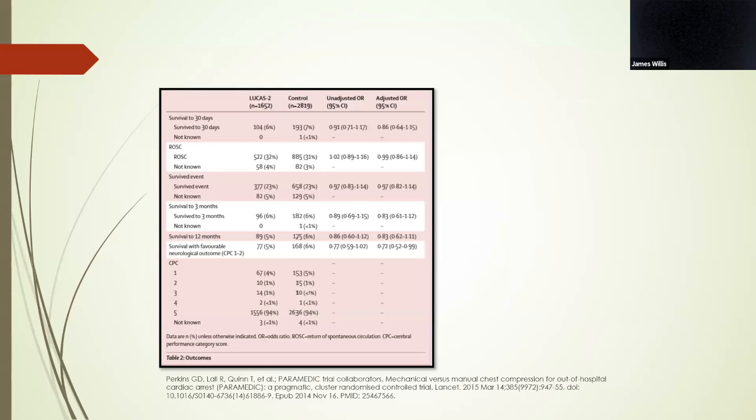Because they had a limited number of devices, the randomization occurred in a 1-to-2 ratio. And they still found no significant difference between the two groups with respect to primary outcome, but the LUCAS group trended towards worse survival with good neurologic status.